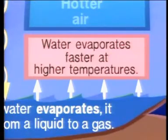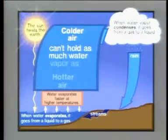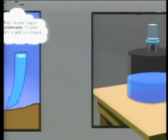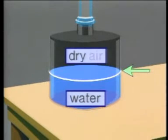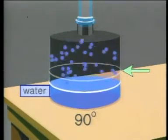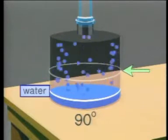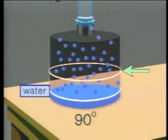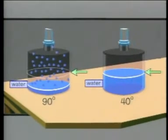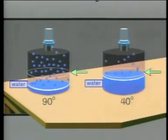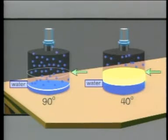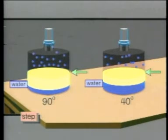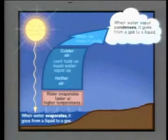Next fact: colder air can't hold as much water vapor as hotter air. A given volume of air can hold only so much water vapor. Inside this container is water and perfectly dry air at 90 degrees Fahrenheit — watch what happens: the water evaporates, but after a while no more water is added; the air can hold only so much. Here's another container at 40 degrees Fahrenheit — this air can't hold as much water vapor as the hotter air.